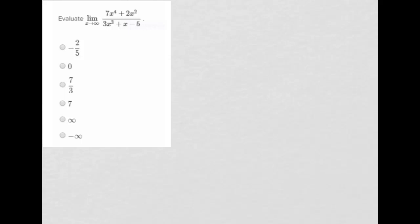For limits as x approaches infinity, first we try plugging in infinity and see what happens. We have infinity plus infinity, that's still infinity in the top, and then infinity plus infinity minus 5, that's infinity in the bottom.